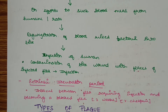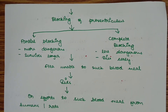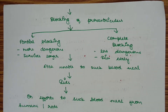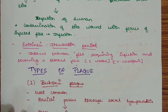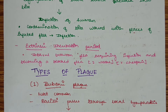Contamination of bite wound with feces of infected fleas is another mode of transmission. Regarding blocking of the proventriculus: partial blocking is more dangerous because the flea can survive longer and infect more hosts, while complete blocking is less dangerous as the flea will die early. The extrinsic incubation period refers to the interval between the flea acquiring the infection from the reservoir and becoming a blocked flea after blocking of the proventriculus.